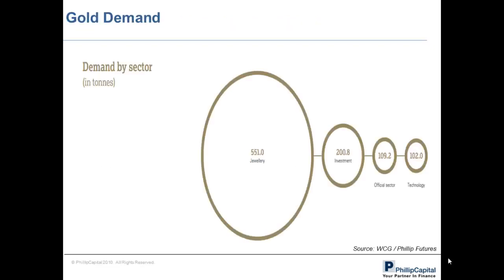In order to track the behavior of gold prices, one can assess fundamental demand that drives gold prices. Gold demand can be separated into four distinct categories: jewelry demand, which contributes the major bulk of world gold demand; investment demand; official sector demand, associated with central bank buying and selling of gold; and lastly, technology demand.